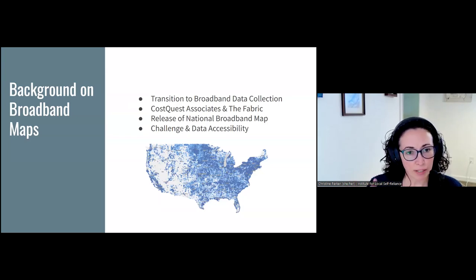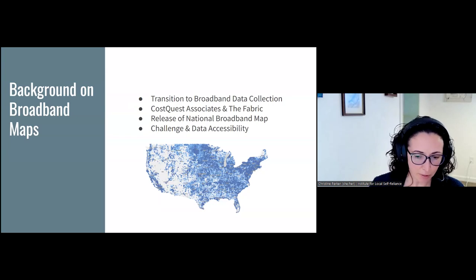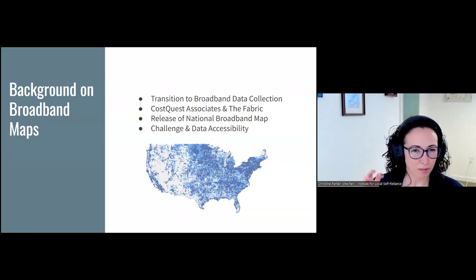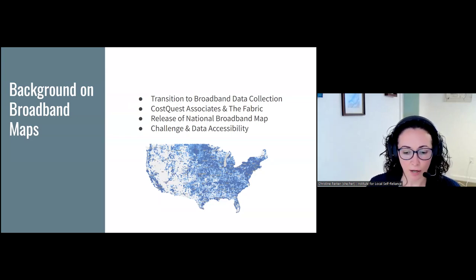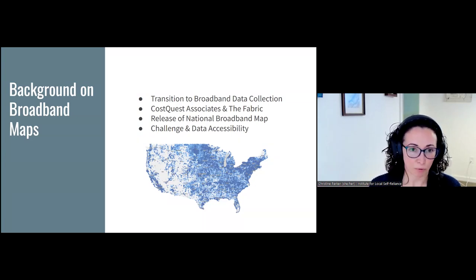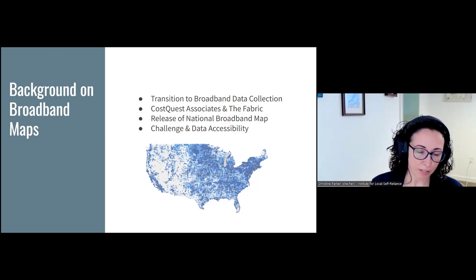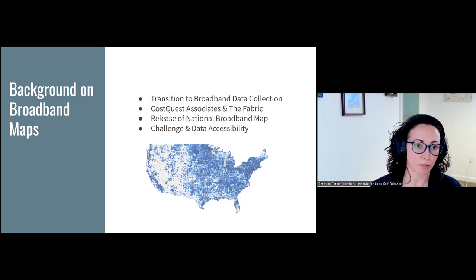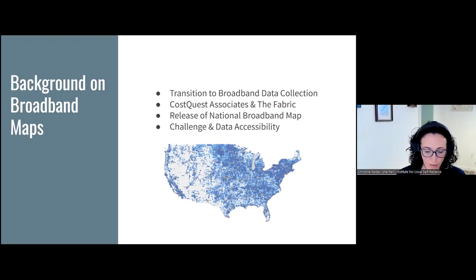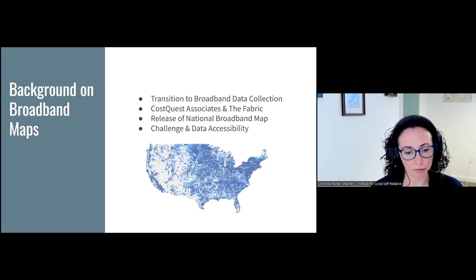Before we get into more detail about the map, I wanted to talk about the transition itself. The previous map illustrated broadband availability at the census block level — think of it like a city block. There were problems with this: provider data was generally over-reported, not necessarily by fault of the ISPs, but inherently by how it was reported. If within a census block one location was served by a provider, the whole block was considered served. So there was gross over-reporting across the country, as well as over-reporting of competition among providers. This was problematic, and so there was an impetus to move toward a more detailed map system.